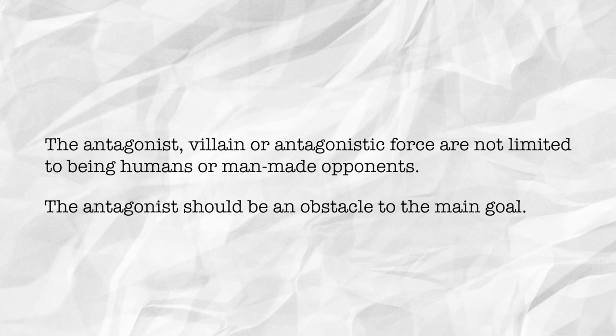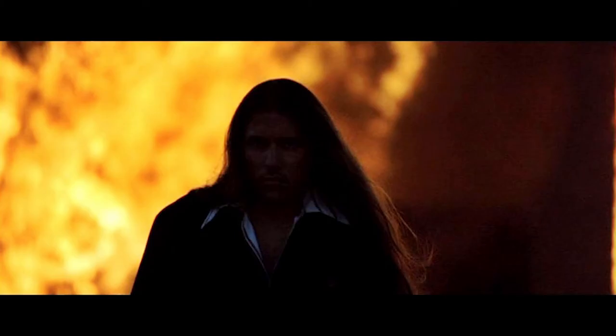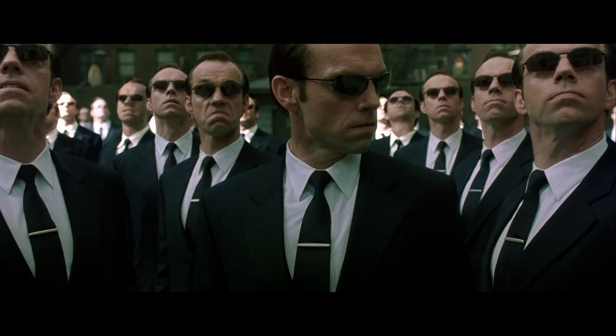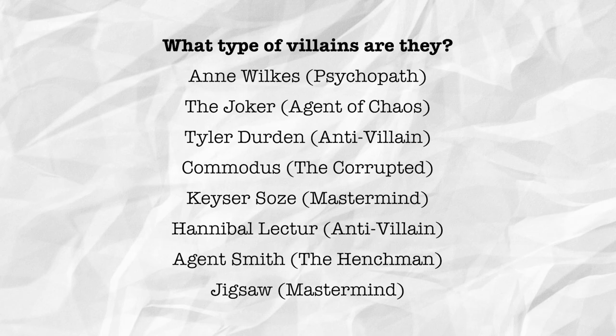Here's a quick tip: the better the villain, the harder it's going to be for your hero to achieve that goal. For a quick reference on what a strong villain looks like, here are some favorites: Anne Wilkes from Misery, The Joker from Dark Knight, Tyler Durden from Fight Club, Commodus from Gladiator, Kaiser Soze from The Usual Suspects, Hannibal Lecter from The Silence of the Lambs, Agent Smith from The Matrix, and Jigsaw from the Saw series. I'll put some links in the description below for those movies if you want to check them out on IMDb.